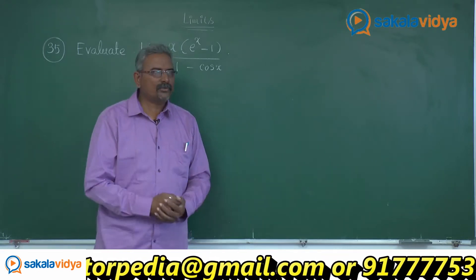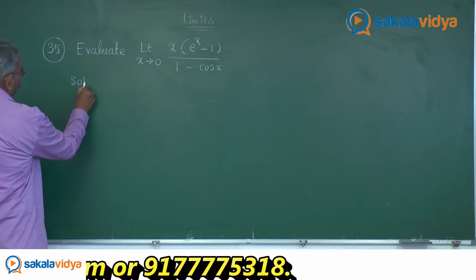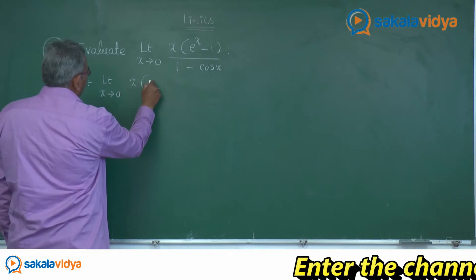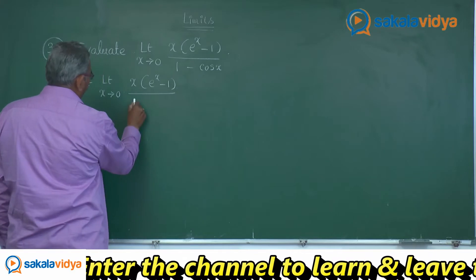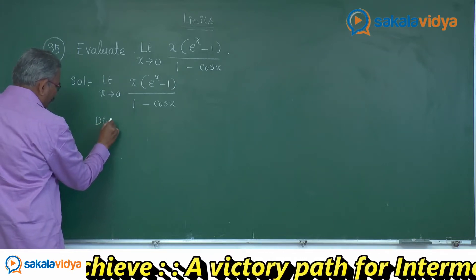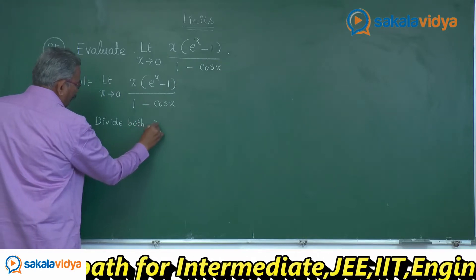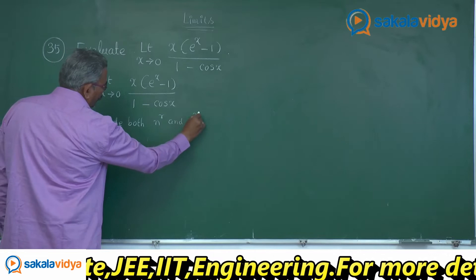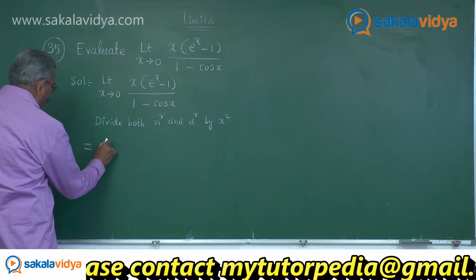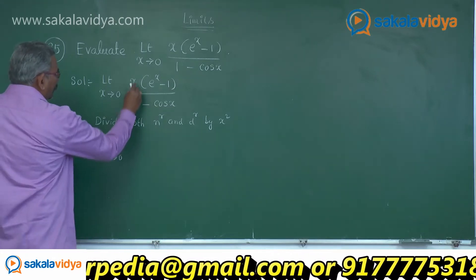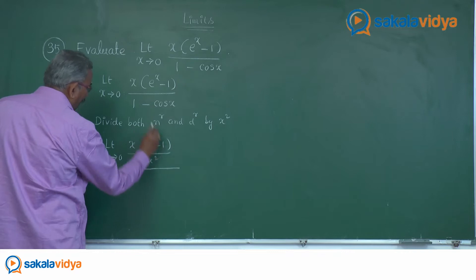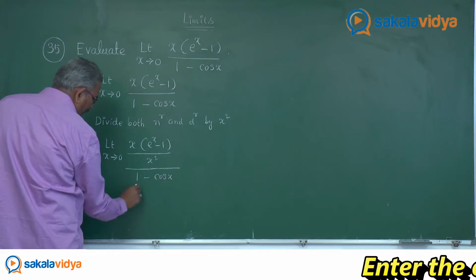Are you ready? Let us start the solution. Limit x tends to 0: x multiplied by e power x minus 1, by 1 minus cos x. Divide both numerator and denominator by x square. The expression becomes: limit x tends to 0, x multiplied by e power x minus 1 by x square, divided by 1 minus cos x by x square.